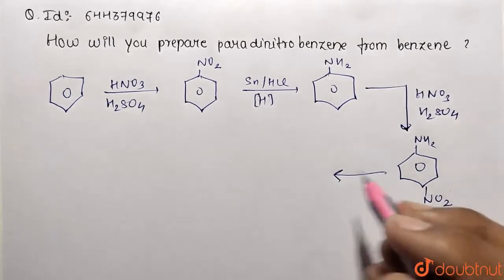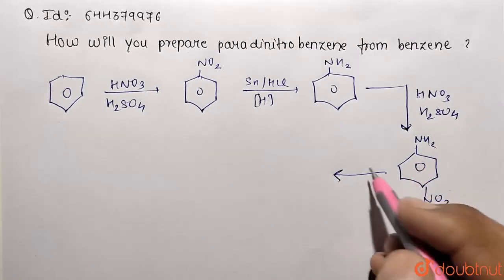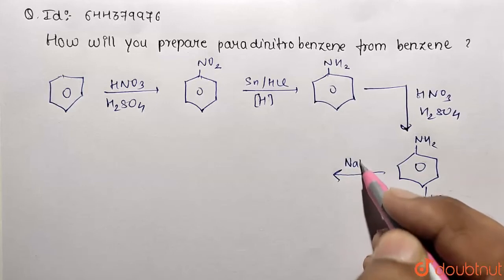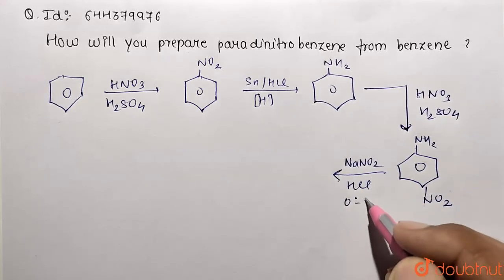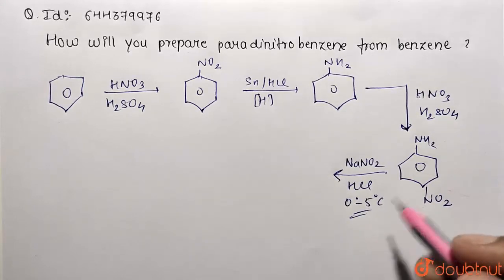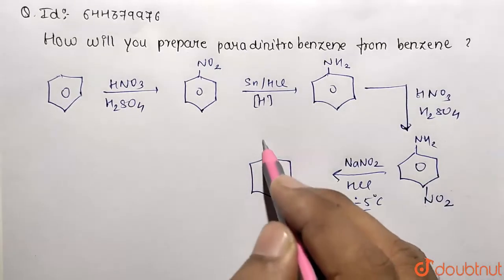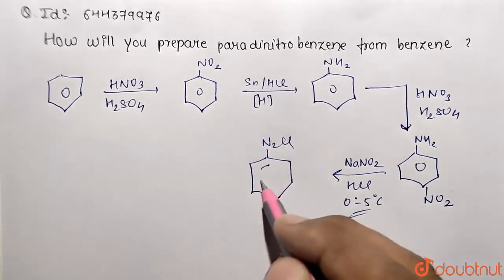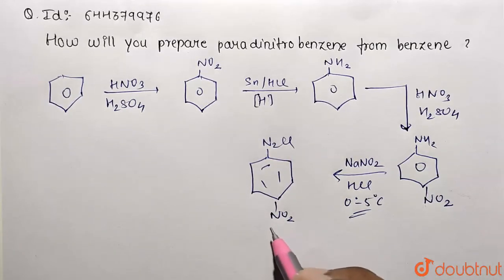Now you need to perform the diazonium reaction. That means this aniline will be converted to corresponding diazonium salt. That will be done in the presence of NaNO2 and HCl. And temperature will be same as diazotization reaction, that is 0 to 5 degrees Celsius. So you are going to get diazonium on this place. So it is going to convert into N2Cl. So this is the corresponding product and this is containing NO2 at the same place.